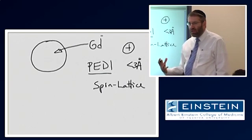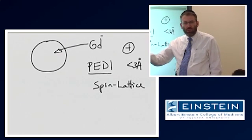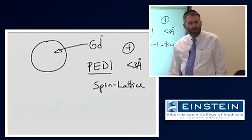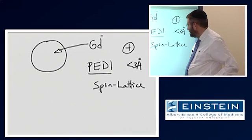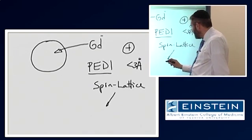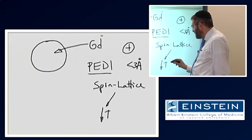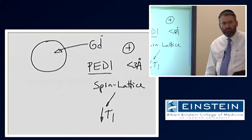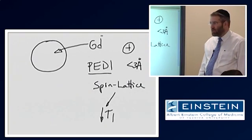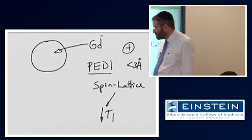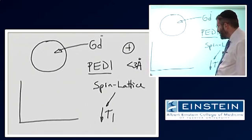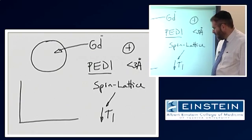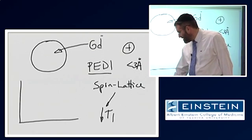It is increasing the likelihood that those spins will be able to dump their energy into the environment, which translates into a shortened T1 relaxation time. How is it, then, that this relates to what we see on an image?